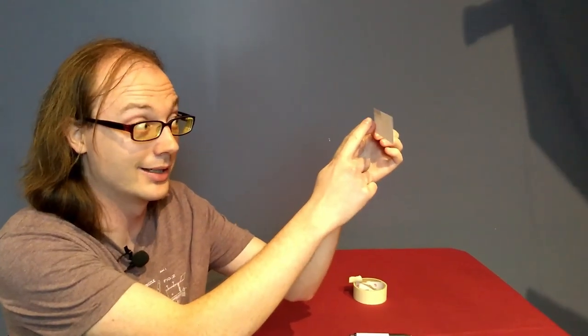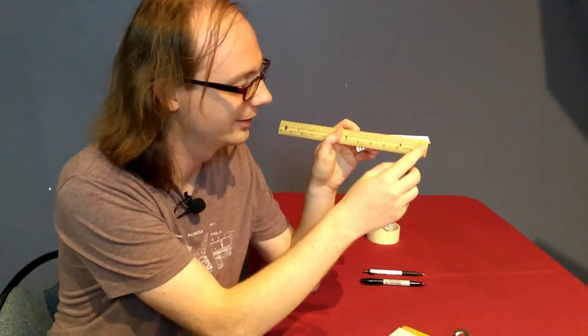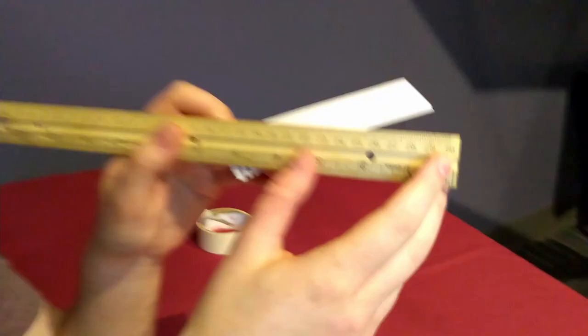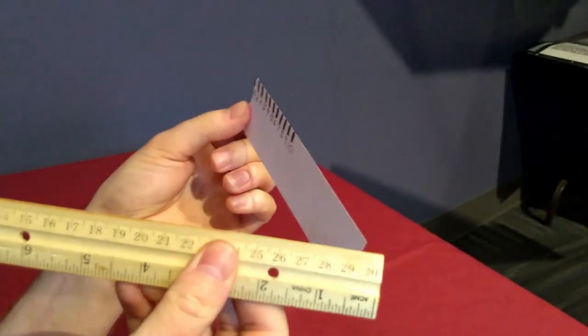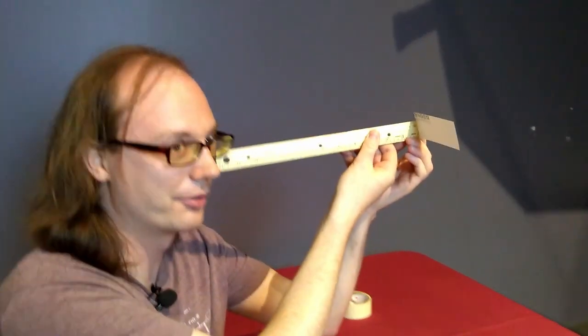And what we can do actually is because a ruler is 30 centimeters or 300 millimeters long, typically, I can just tape this to the end and hold it up to my eye and I'll be able to easily measure degrees.